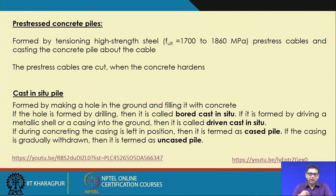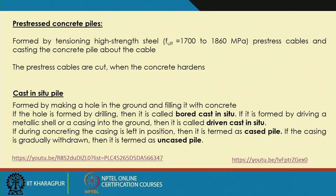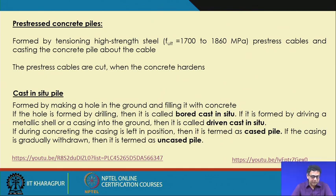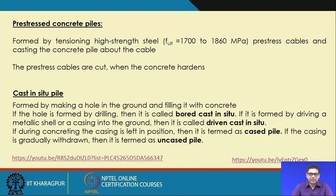Before casting, a high strength pre-stressed cable is placed, then concrete is poured around the cables. When the concrete hardens, the pre-stressed cables are cut, allowing the pile to take a greater amount of load.